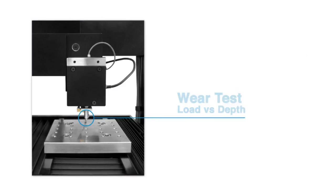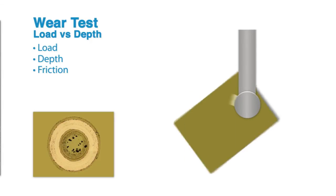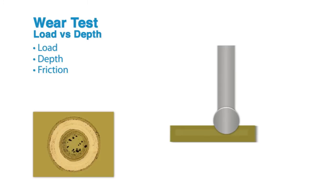The wear test is based on constant load versus depth measurement and builds a detailed map of load, depth and friction. There are two tests available to imitate wear conditions: the rotational wear test or the linear wear test.